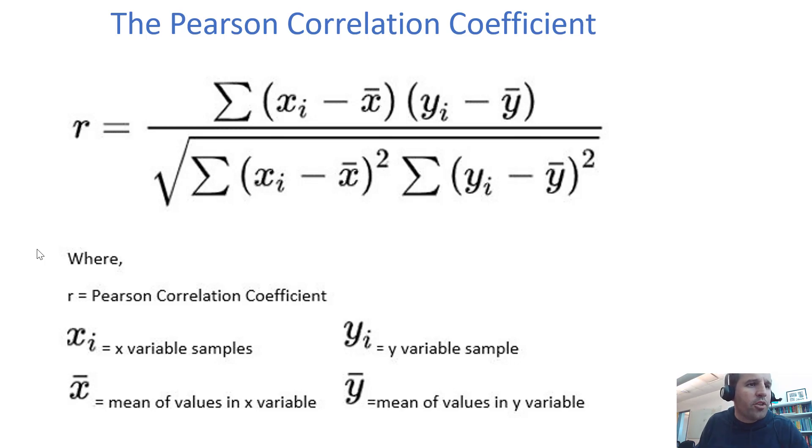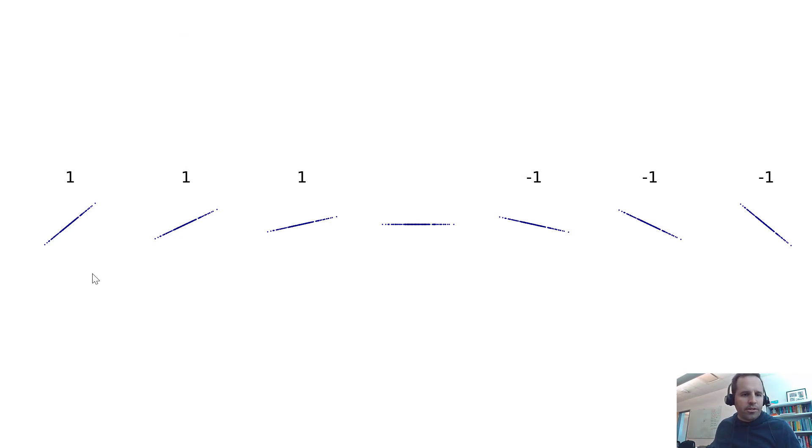That may not be particularly intuitive, so we'll just look at some examples. In all of these examples, we have perfectly linear correlated data. If we had X here and Y here, you can see that there's a perfect linear relationship between Y and X, and that relationship is positive. That gives us a correlation coefficient of 1, and it doesn't really matter what the slope is, those relationships would all be 1.